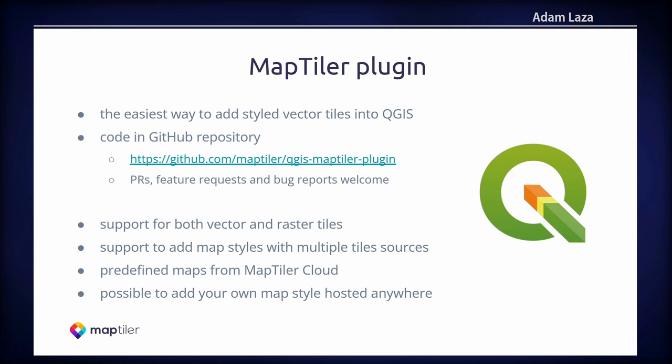The MapTiler plugin is the easiest way to add styled vector tiles into QGIS. It's open source, the code is on GitHub. If you find any problem, feel free to report any bugs and ideally push some PRs. It's possible to add both vector tiles and raster tiles. You can add the map with multiple tile sources. The plugin comes with predefined maps from MapTiler Cloud, but if you have your own tiles or own style.json hosted anywhere else, you can use the plugin as well.